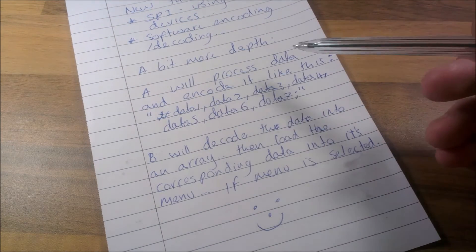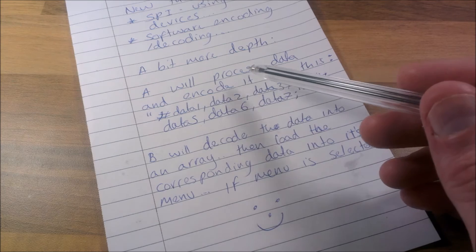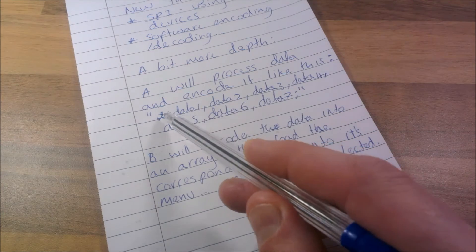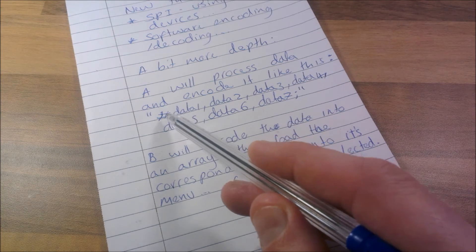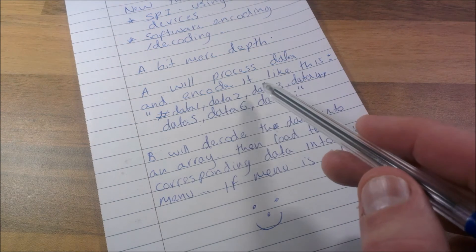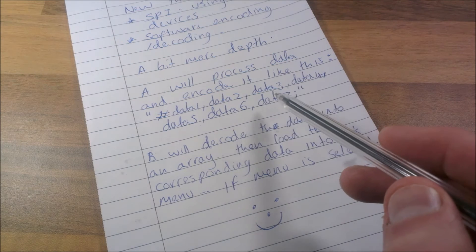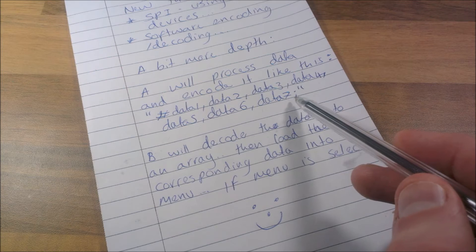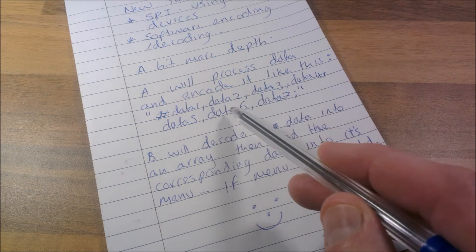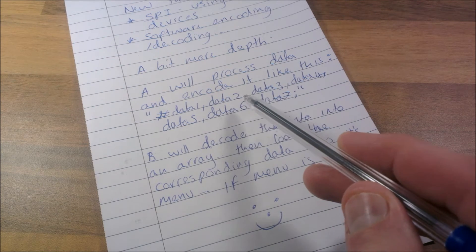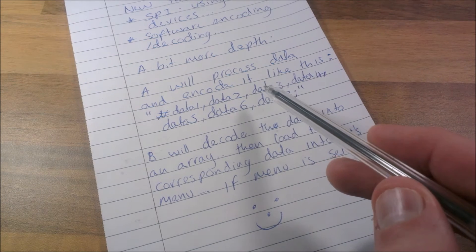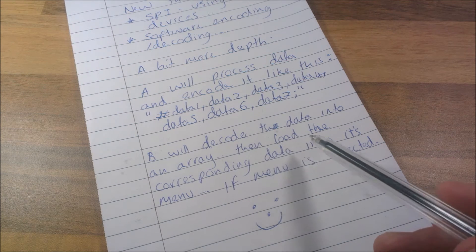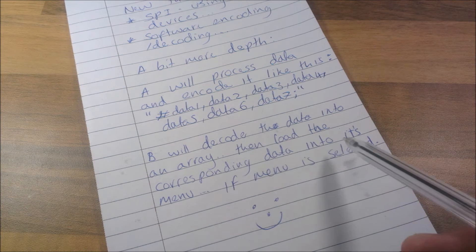In a bit more depth, A will process data and then code it like this. This is exactly how I'm going to do it. It starts with a hash symbol, then data1, data2, data3, data4, data5, data6, data7, separated by commas and ending in a semicolon. That's how I'm going to be able to identify data and split them. B will decode the data into an array and then load the corresponding data into its menu if the menu is selected.